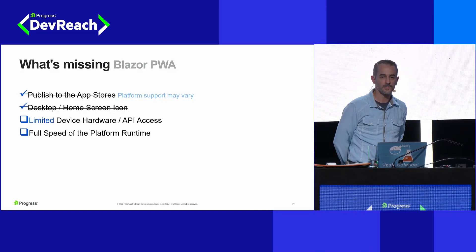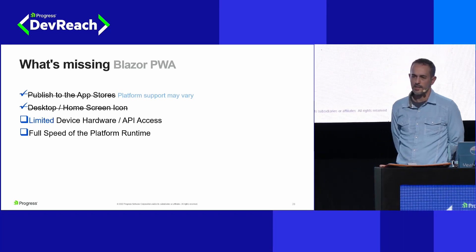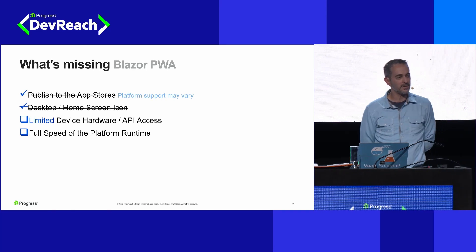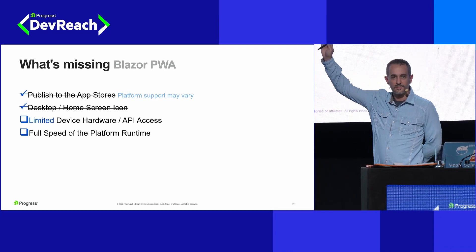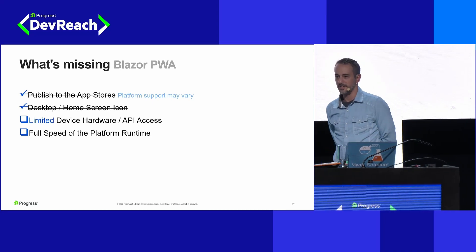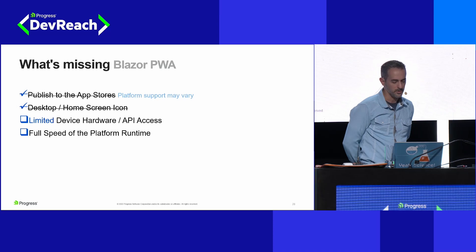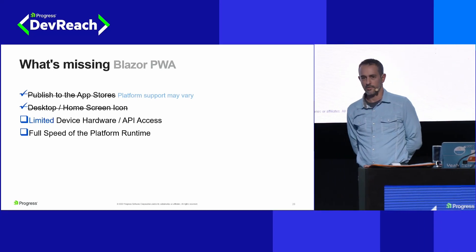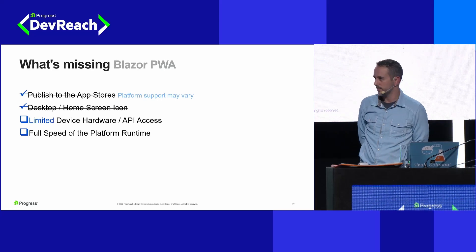But there are still some things missing. I said 'platform-like' — there are little nuances. We can publish to the App Store; Apple has gotten a lot better about this. There are also some surprising app stores — for instance, PWAs work on the Meta Quest. You can run 2D Blazor applications on a Quest if they're a PWA. There's also the limited device hardware and access to device APIs — if a brand new sensor comes out for an iPhone that nobody anticipated, there may just be no API for it. And we're still running in Blazor WebAssembly, which is a little bit slower than on a platform.